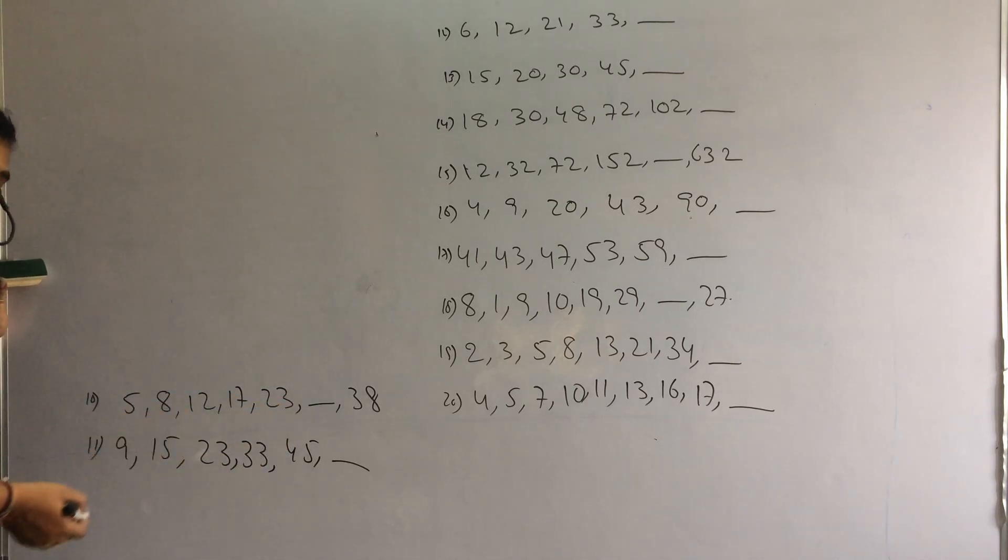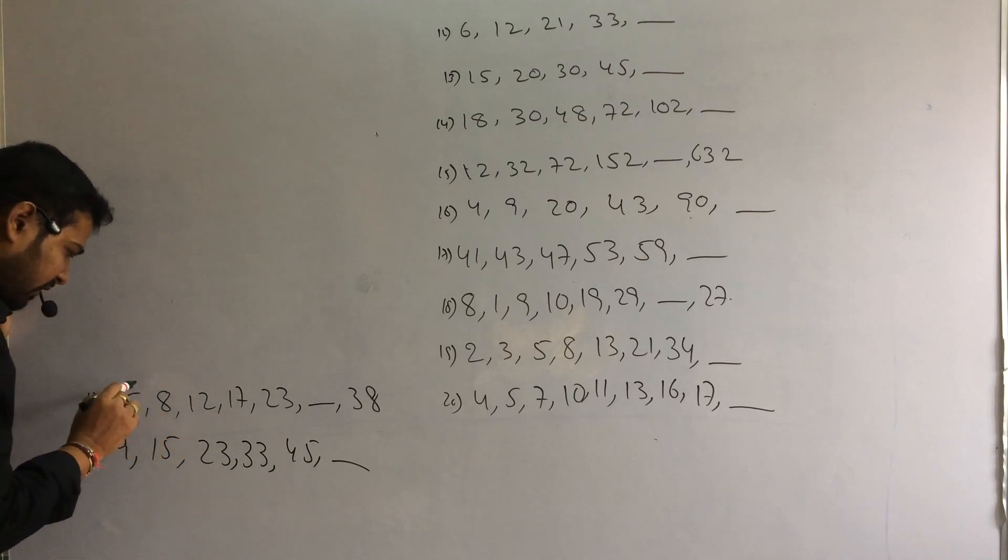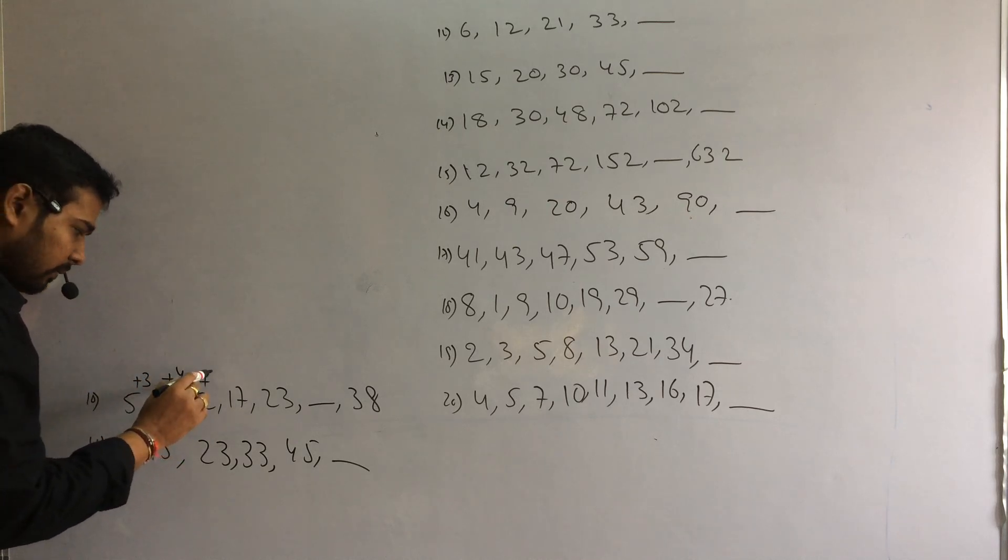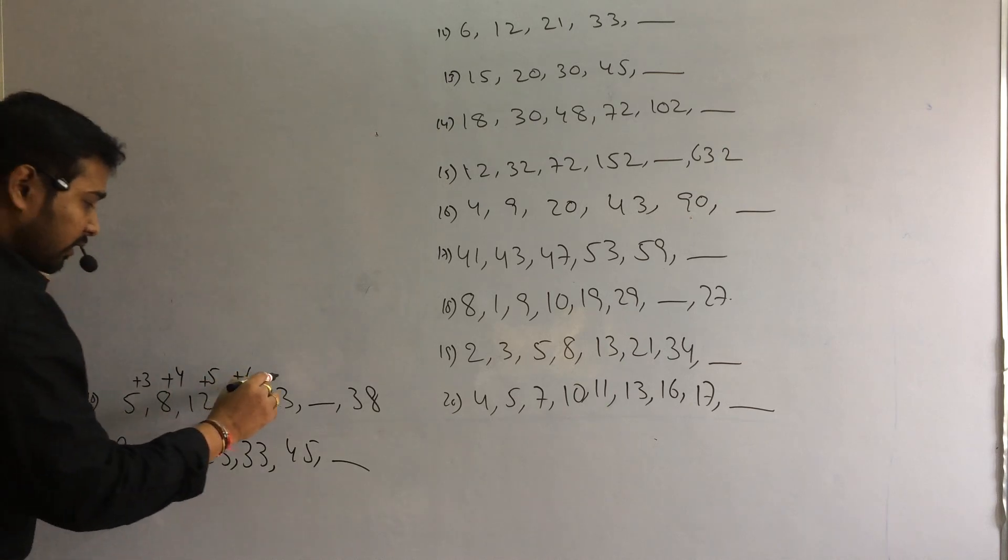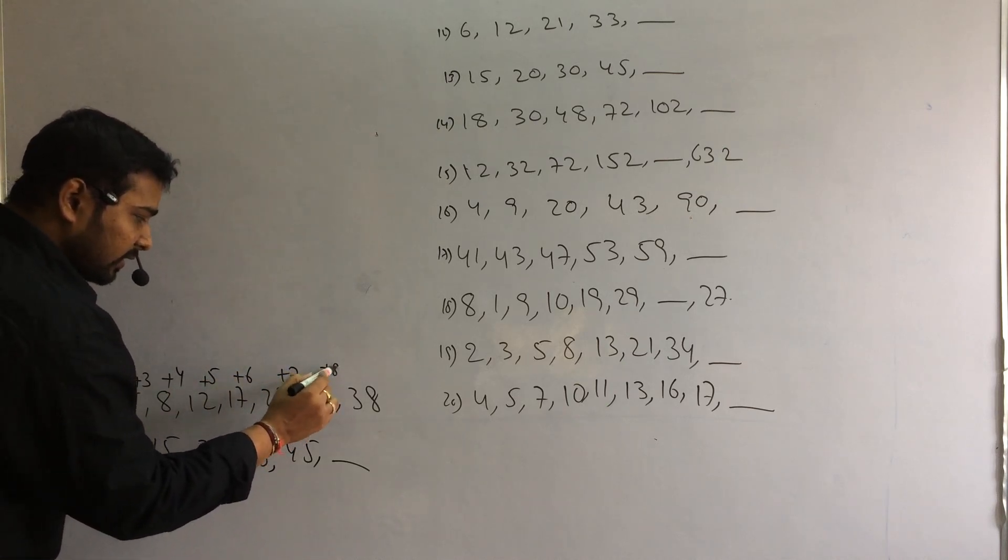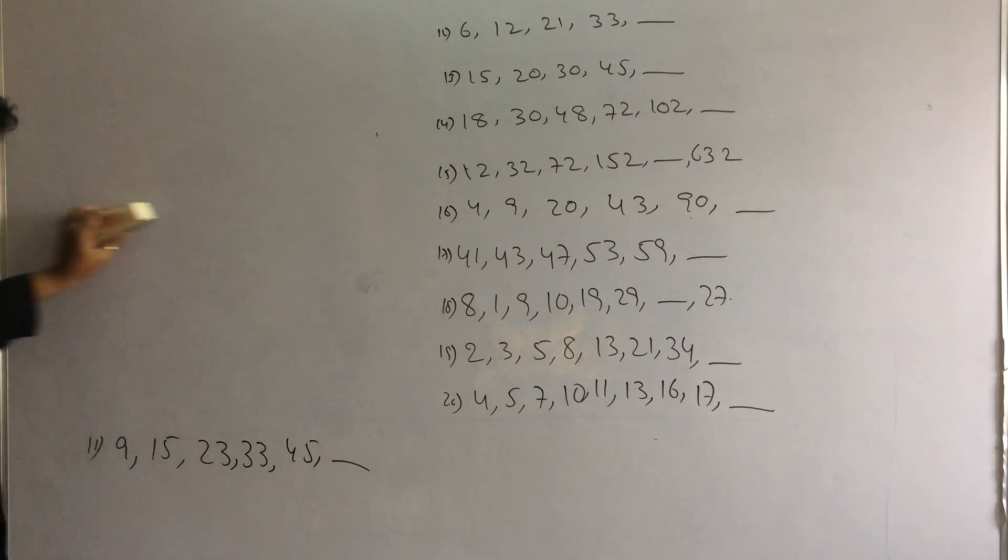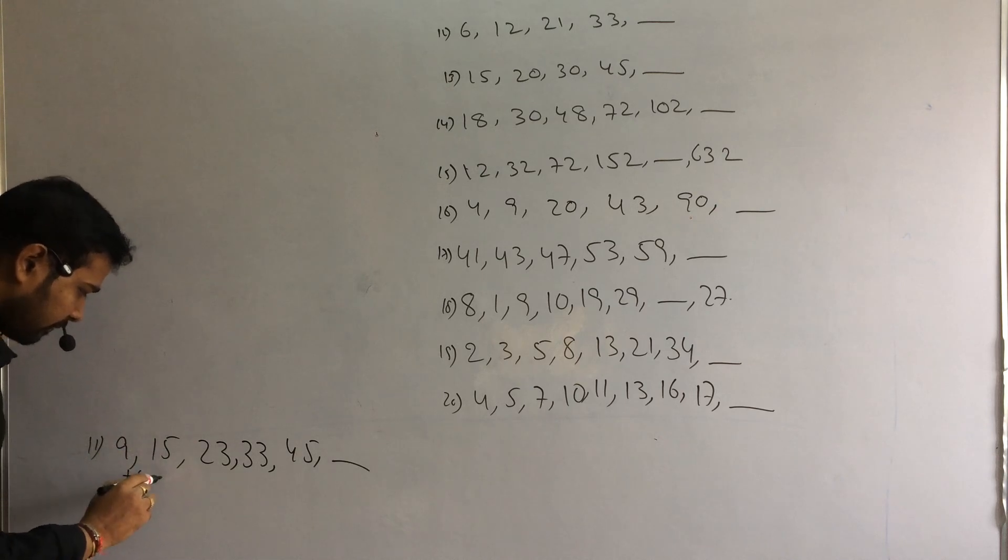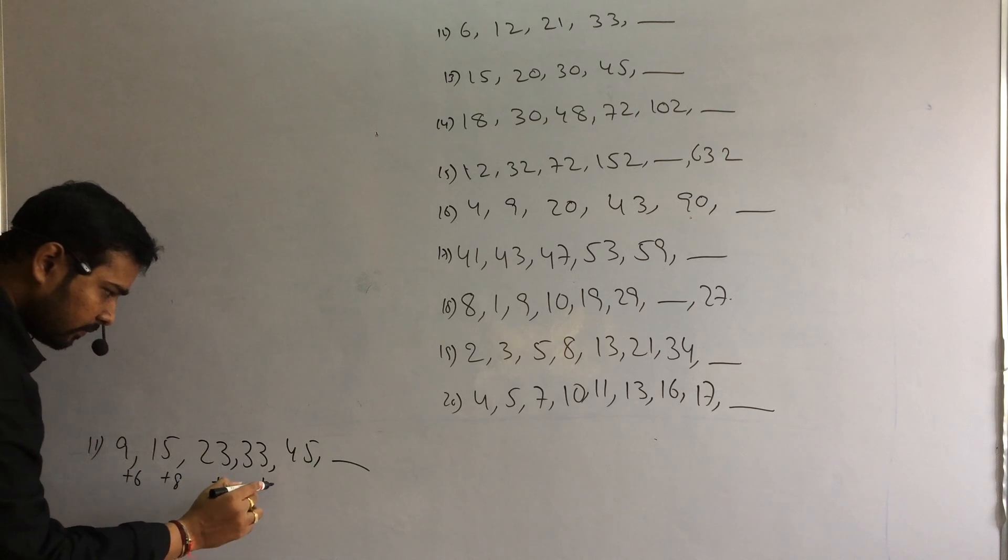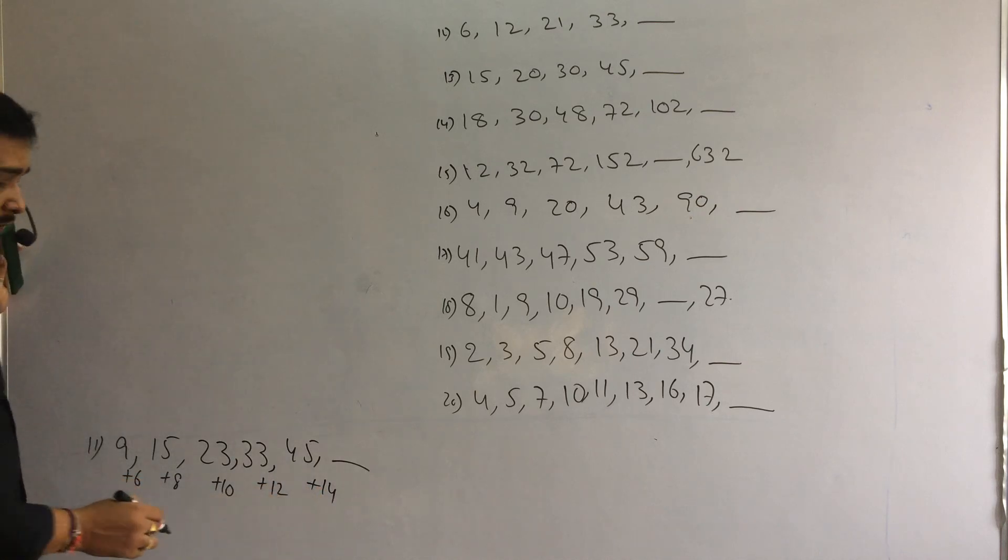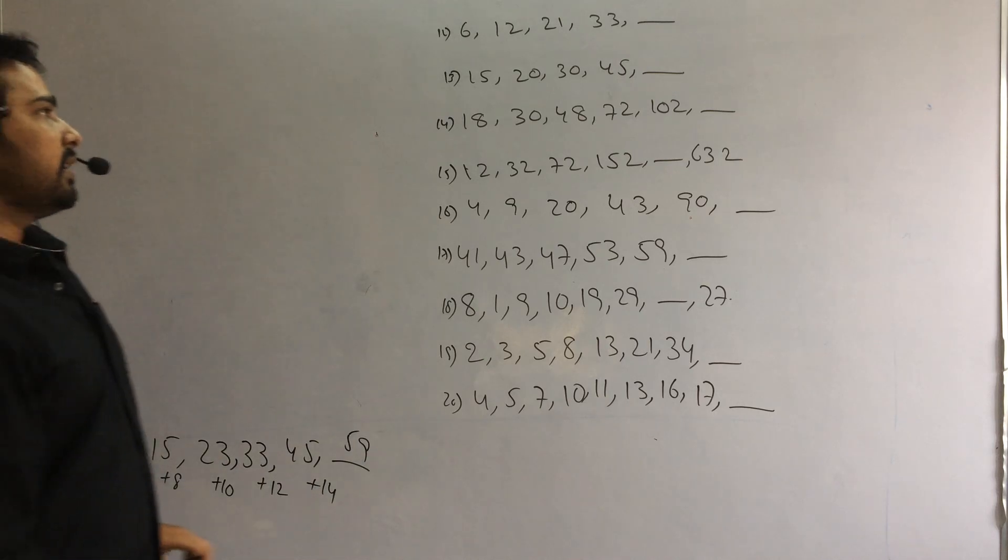Here difference is very normal. 5 plus 3, 8 plus 4, 12 plus 5, 17 plus 6, 23. What next? Plus 7, that's your answer. 30 plus 8, 38. So natural numbers increasing order. Next. Here difference is very normal. 6, 8, 10, 12, they are even numbers. After 12, next even number is 14. If you add 14 to 45, answer is 59.